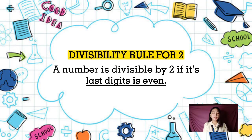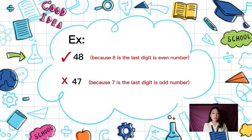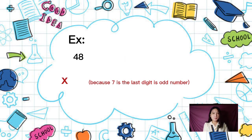A number is divisible by 2 if its last digit is even. For example, 48 is divisible by 2 because 8, the last digit, is an even number. On the other hand, 47 is not divisible by 2 because the last digit here is 7, which is an odd number.